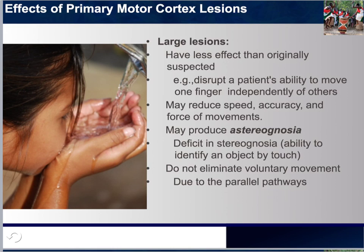Additionally, individuals with damage to the primary motor cortex may not be able to identify an object by touch. You may remember from Chapter 7 we discussed stereognosis — our ability to detect and identify objects simply by touching them — due to cutaneous receptors sending sophisticated messages to our brain. Astereognosis would be a deficit in that ability. We also see that damage to the primary motor cortex can impact certain movements but not necessarily voluntary movement, believed to be because of the multiple pathways available, allowing us to remain resilient despite some brain damage.